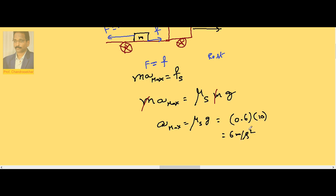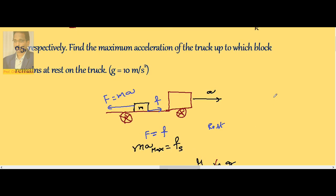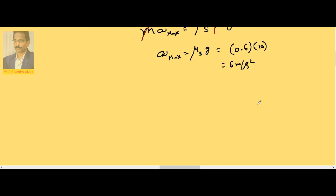Up to this acceleration, box will remain at rest. If A is greater than A maximum, then block slides backwards.